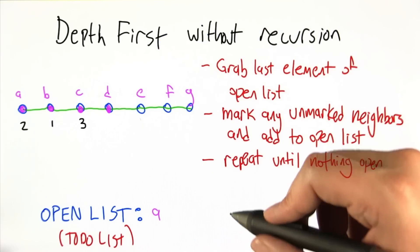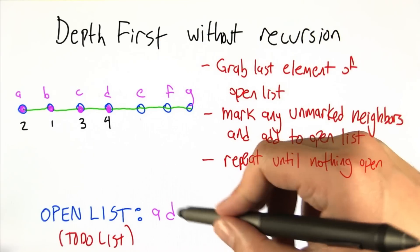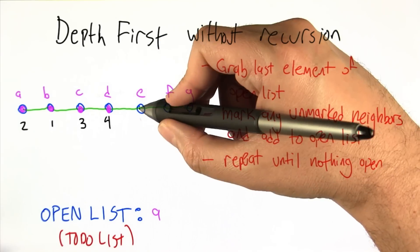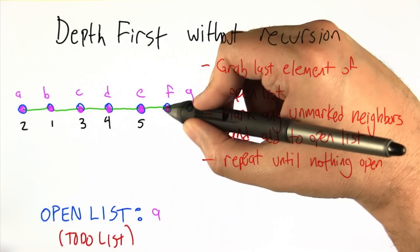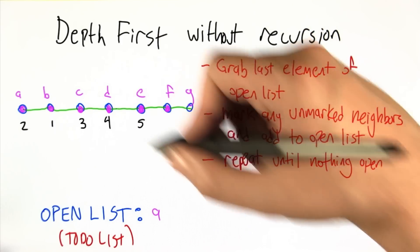D and B. Now we work on D, take it off the open list, add its neighbors, E and C. Now we can take E off the open list, add its neighbors, F and D's already done.